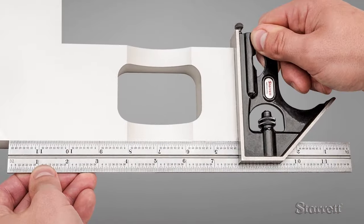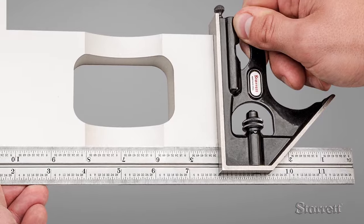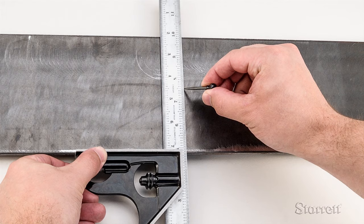Among its many applications, the combination square can be used to check for squareness, depth, and precise distance from an edge.